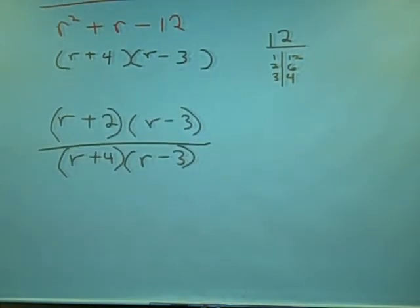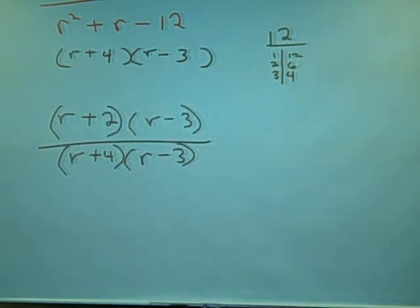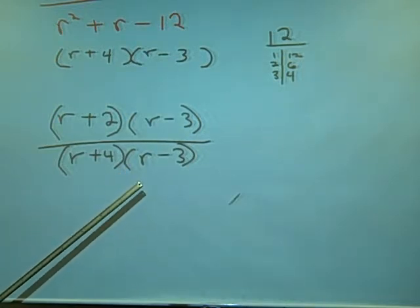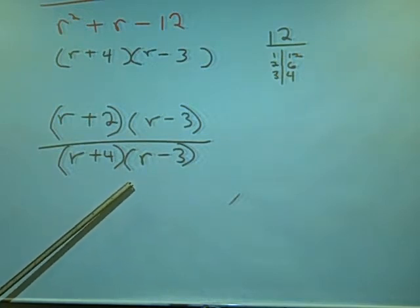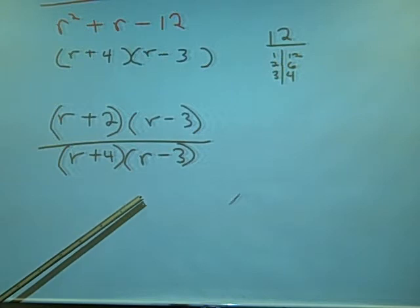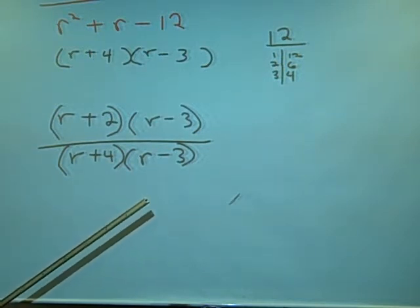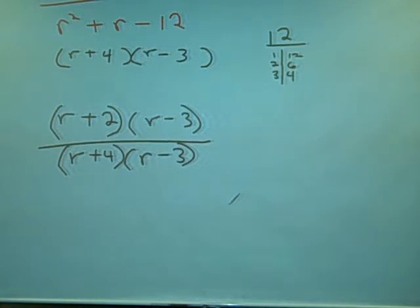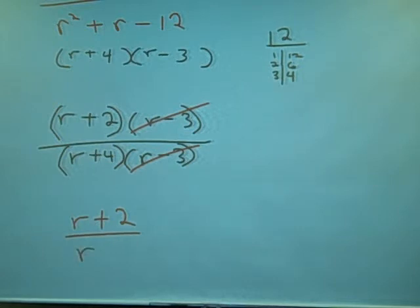Okay, so, what can cancel? Here. There's a quantity. Well, what's exactly the same? If it's exactly the same, we can cancel it. R minus 3. That's right. They're exactly the same. So, we can cancel those out. And so, that leaves us with r plus 2 over r plus 4.